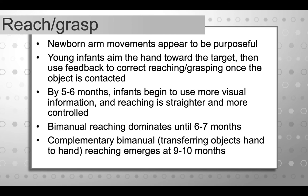Babies tend to use both hands for manual reaching until about six or seven months — often when you hand them something, both hands will come together. Midline control is actually a really important motor skill in those first six months. As they develop, they need to be able to use their hands individually and do complementary bimanual reaching — moving objects from hand to hand — and that sort of starts to emerge by eight to ten months.